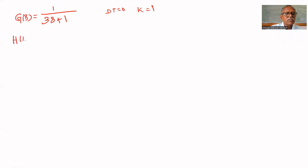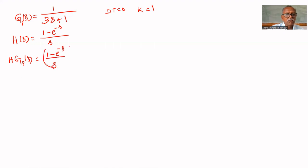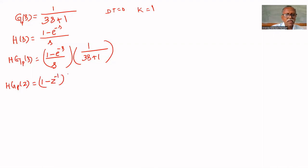H(s) equals 1 minus e^(−s) divided by s, with T=1. So HGP(s) equals (1 − e^(−s))/s multiplied by 1/(3s+1). Therefore, HGP(z) equals (1 − z^(−1)) multiplied by the Z-transform of 1/[s(3s+1)].